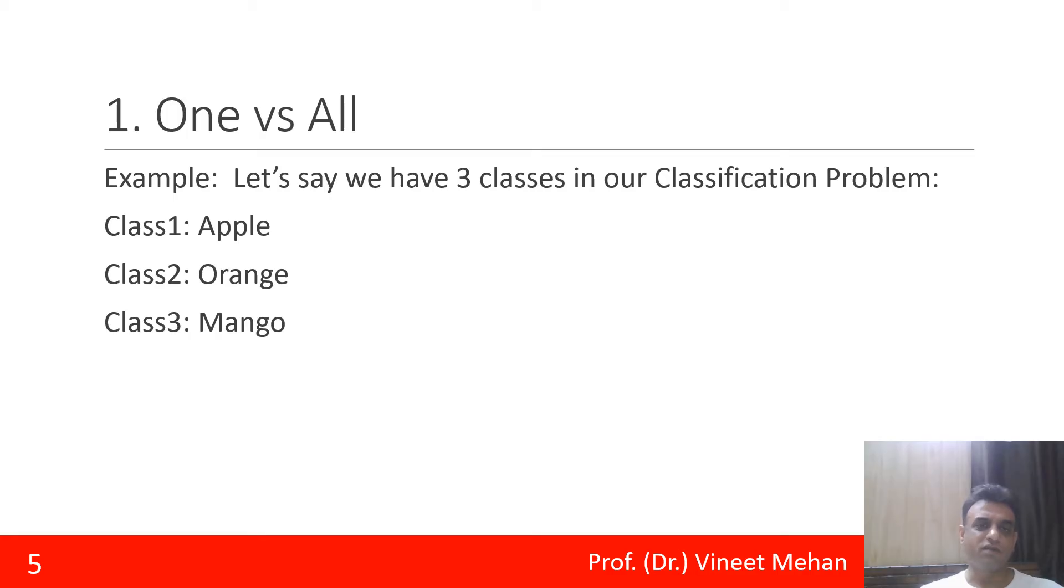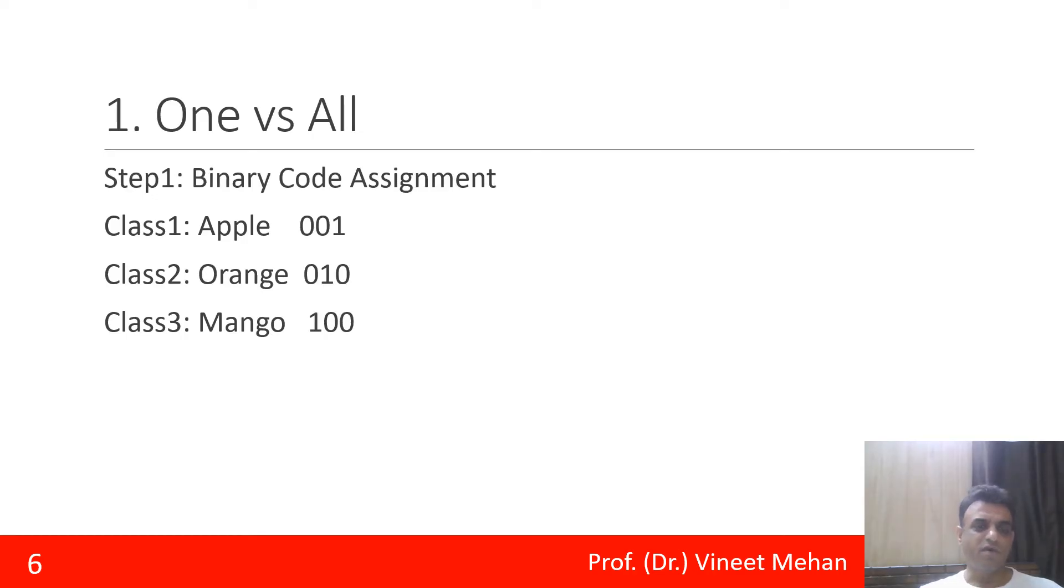Starting with the first one, one versus all technique. Here in this technique we have taken an example where we have three classes: apple, orange, and mango. Then in step number one, we will be assigning binary codes to these three classes. These codes are being assigned arbitrarily. So for class one that is apple, the code assigned is 001. For class two, the code assigned is 010. For class three, the code assigned is 100.